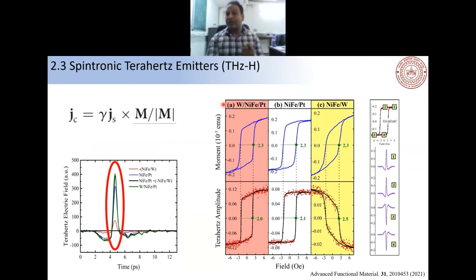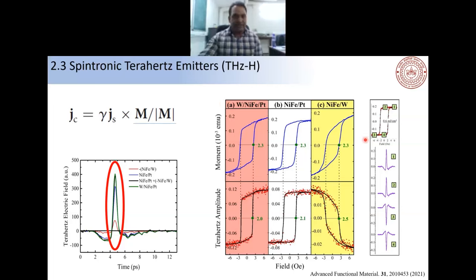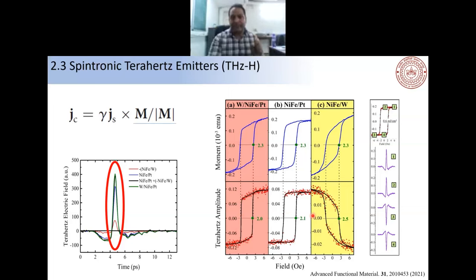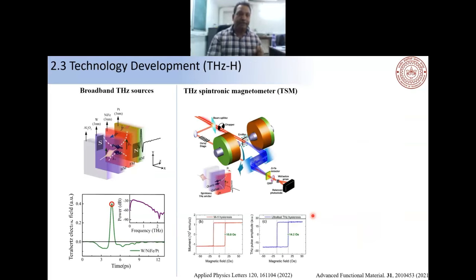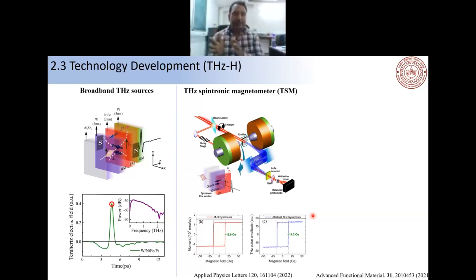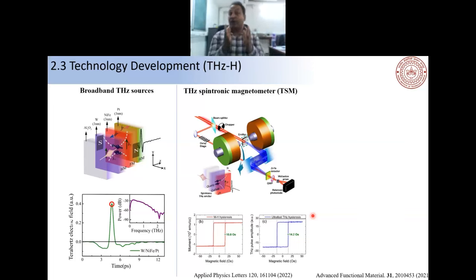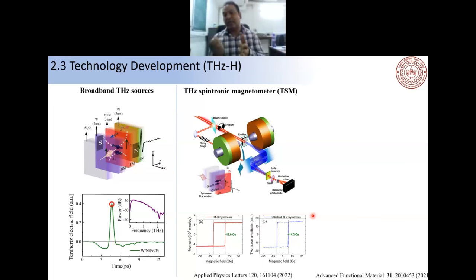We can also control terahertz amplitude by sweeping the magnetic field to control magnetization direction. Our terahertz magnetometer result mimics the VSM hysteresis loop with almost the same coercivity. We published this in an APL paper demonstrating that a spintronic terahertz emitter can be used like a VSM to measure ferromagnetic material properties. We can also use it as a spintronics modulator — modulating the terahertz source by heat or light.